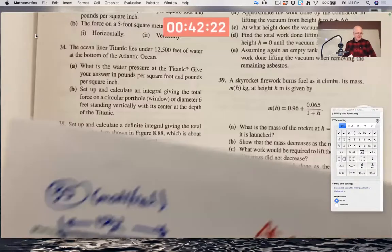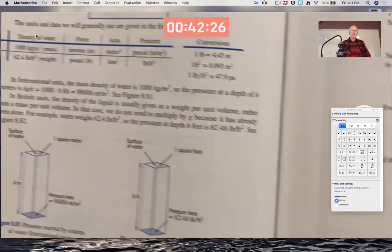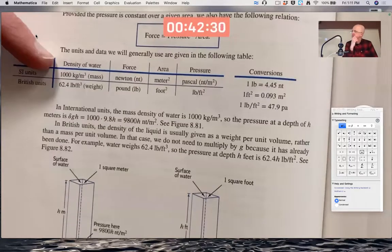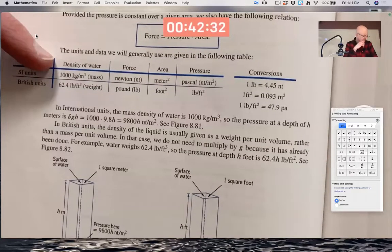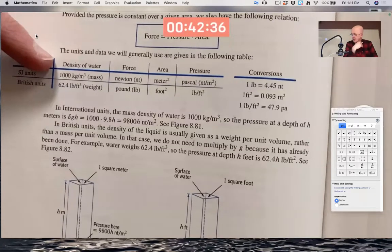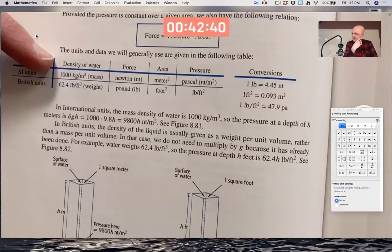The mass density of water in the SI units, as I've already mentioned, is 1,000 kilograms per cubic meter. That's the delta. G is, of course, 9.8. And H is whatever the depth is.